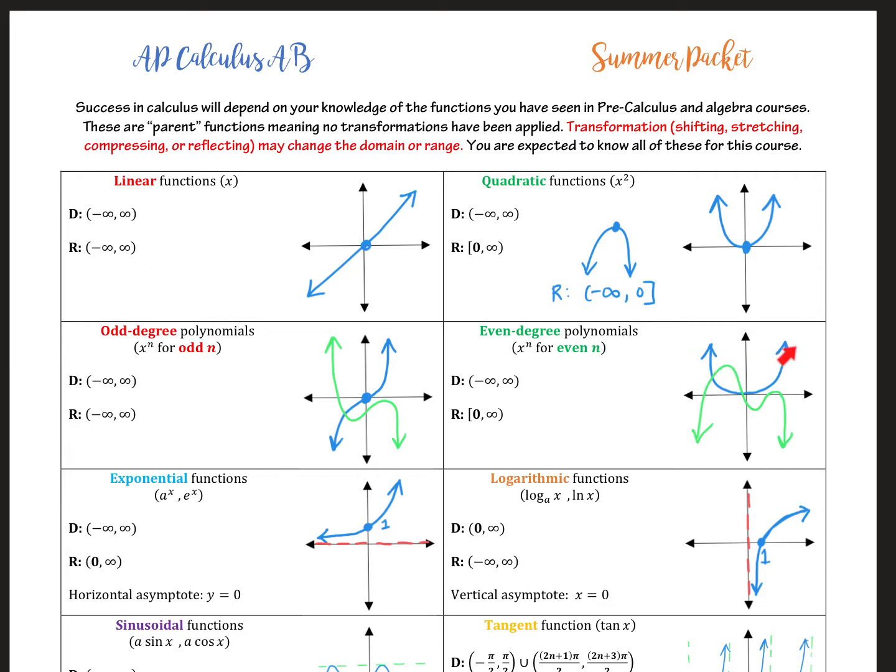Here, in the one I just drew in green, they're both going down. So a big thing to remember, even degree, the end behaviors are in the same direction, whether they're both up or both down. Odd degree, however, they're opposite directions.